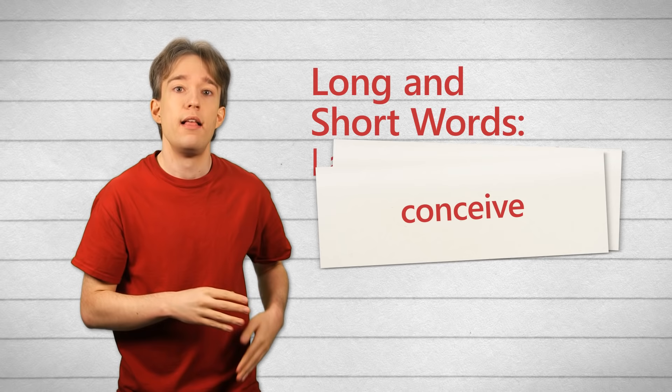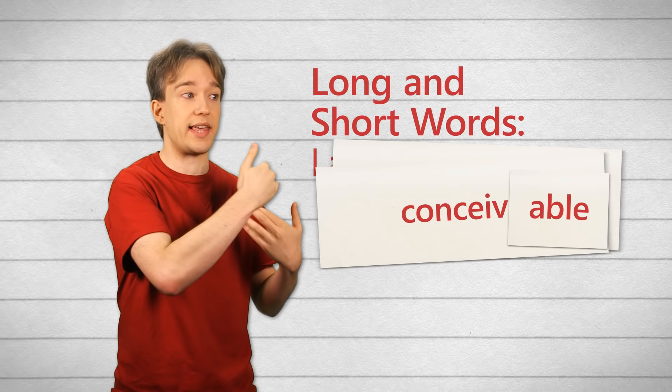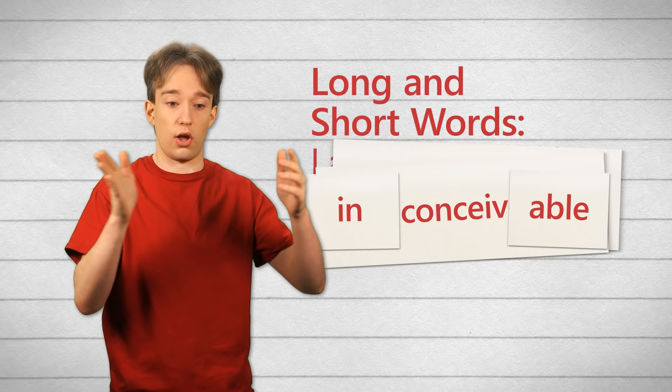Then we've got -able, which means the possibility of something. Conceivable — we can think about this. And then we've got in-, which negates it. Inconceivable — we cannot possibly think about this.